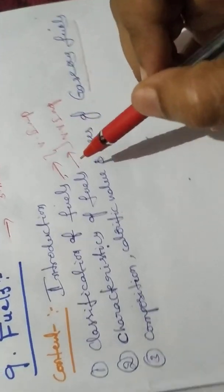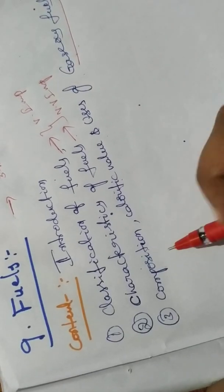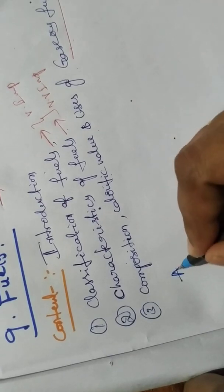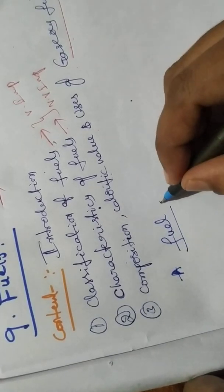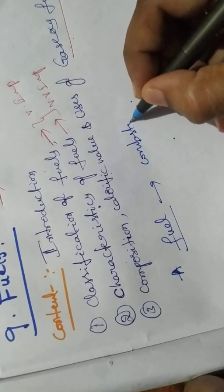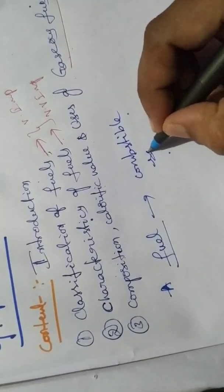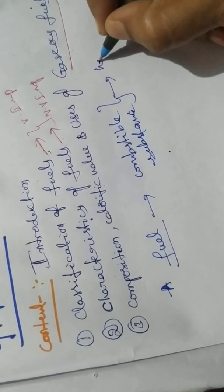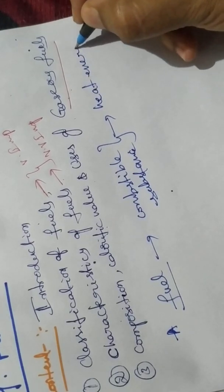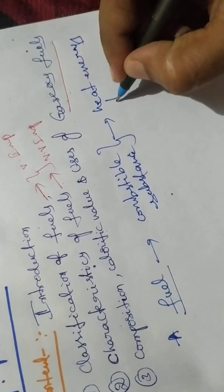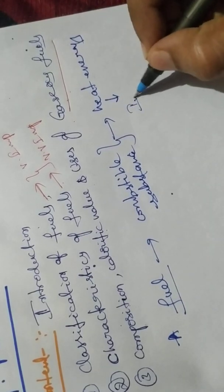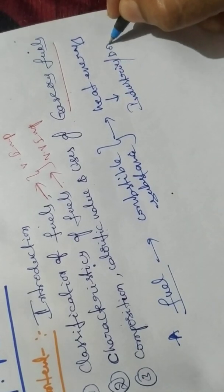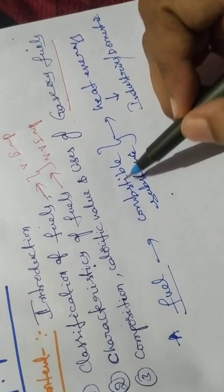Next, let us see the introduction. What is fuel? Fuel is a combustible substance. Combustible means it is burning. These combustible substances burn and give heat energy, which is used for industrial and domestic purposes. Such substances are called fuels.